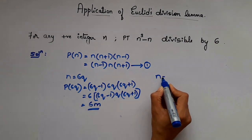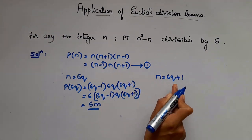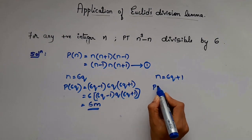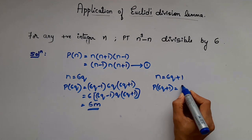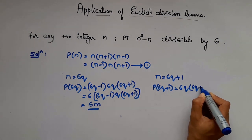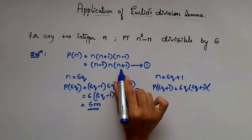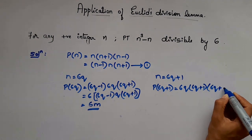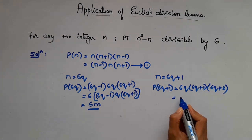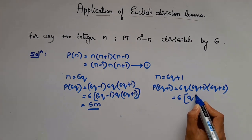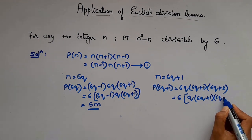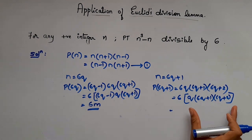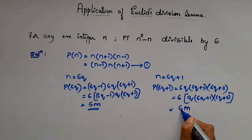Now when n = 6q + 1, replace n with 6q + 1 in the equation. So P(6q+1) gives (6q+1-1)·(6q+1)·(6q+1+1) = 6q·(6q+1)·(6q+2). Taking 6 out as a factor, with the remaining terms as m, this is also a multiple of 6 — clearly divisible by 6.